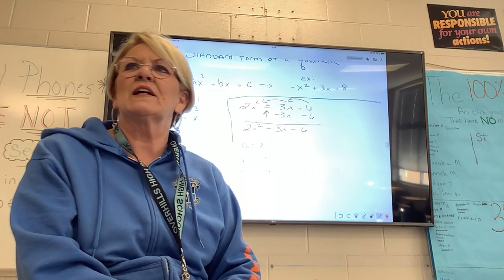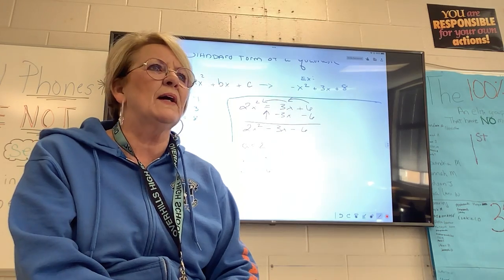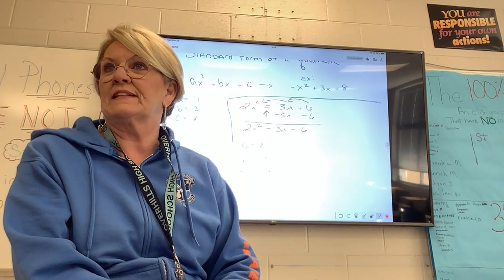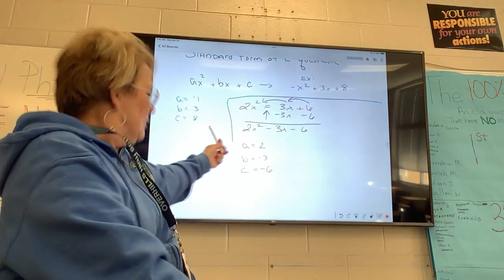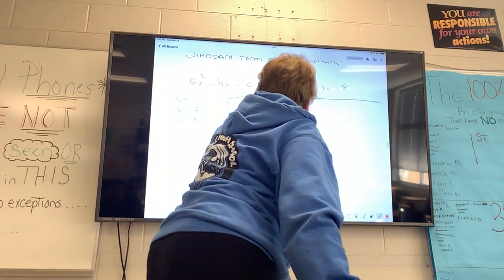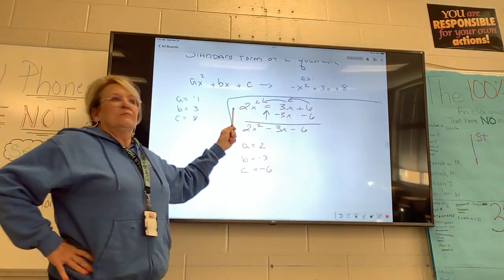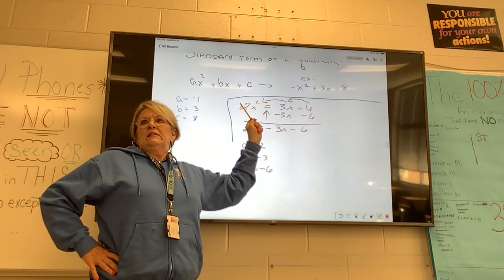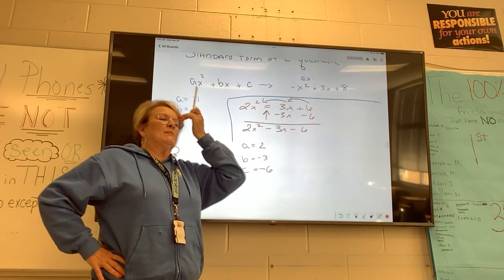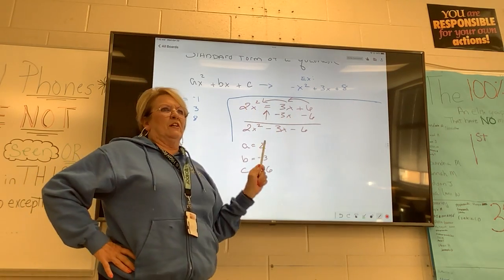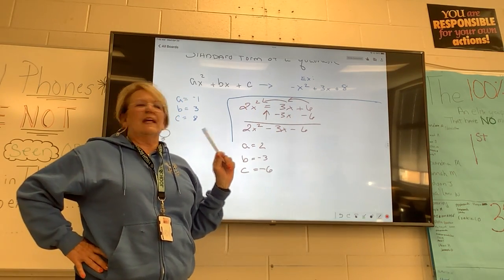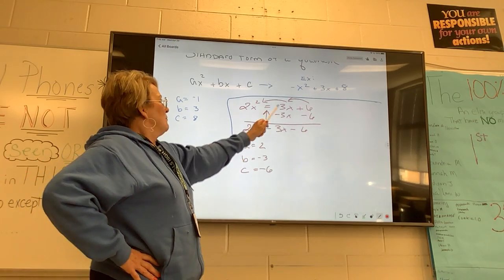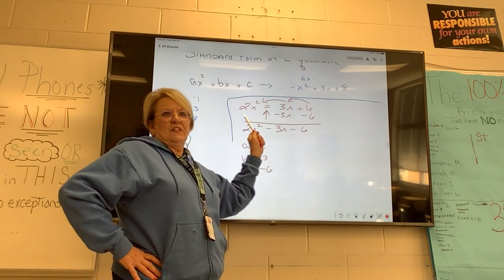Is everybody following along so far? You've got to know standard form, and you've got to know how to put it in standard form. Avoid moving the A term — don't move the A term. Move everything else to the A. Some people might say, 'I'm just going to move the 2X squared over there.' No, don't do that, because you'll see why shortly — it changes everything. You've got to move the other terms over to be with the A term.